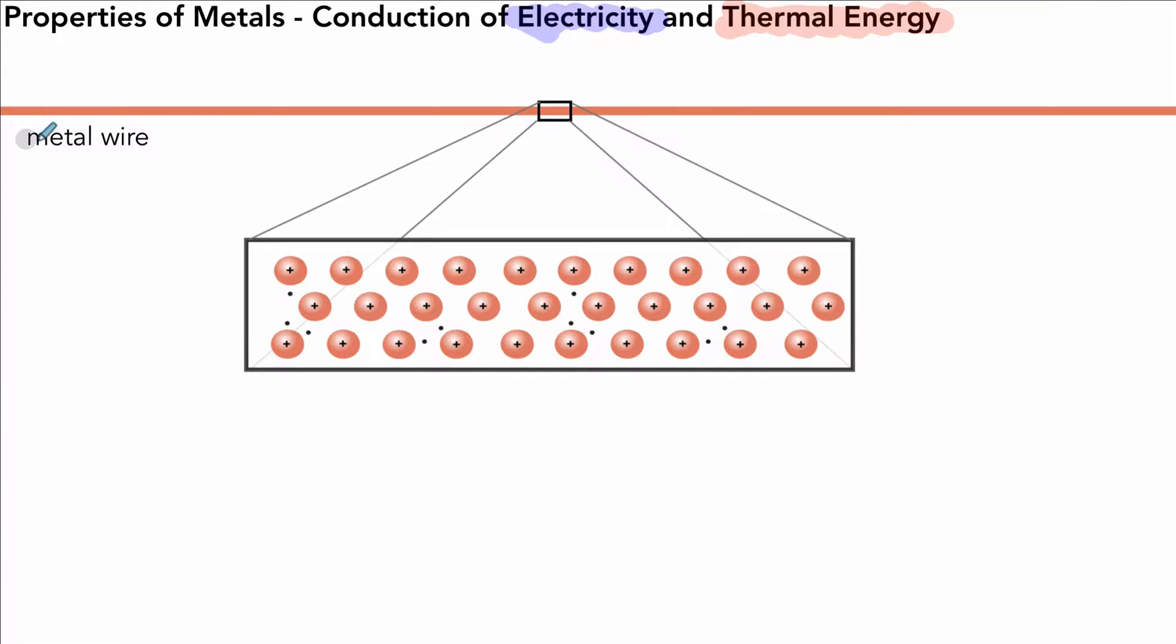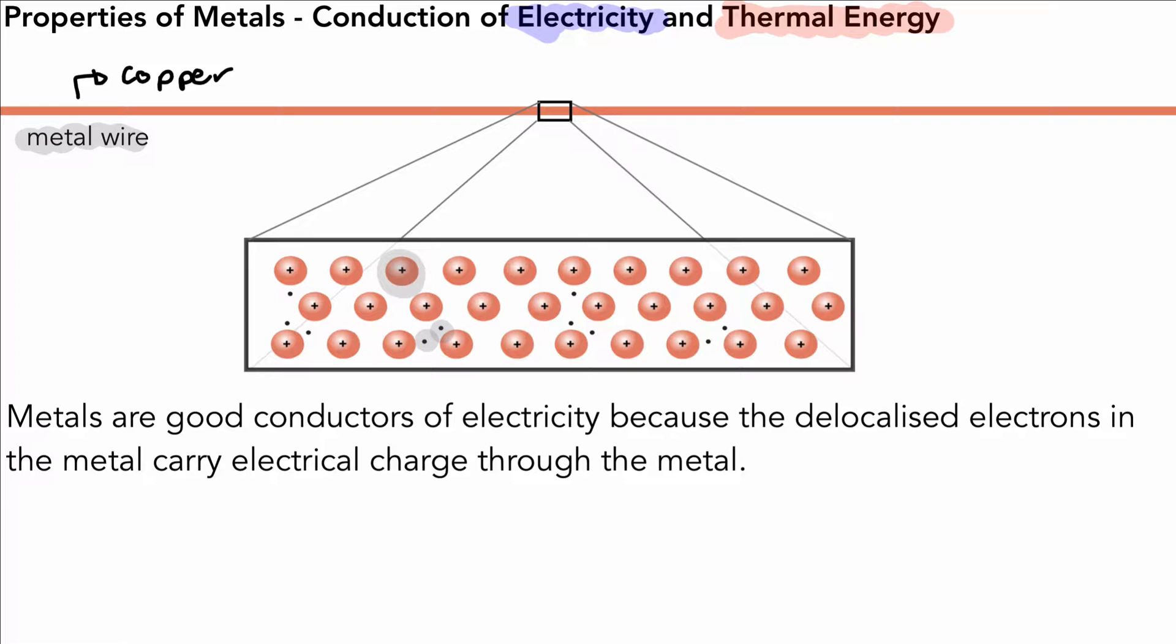So if we were to summarize that in a diagram, here we can look at a piece of metal. In fact, this piece of metal because of its reddish brown color is copper just as an example. But if we zoom in into a particular area, you can see we have our ions here and our delocalized electrons. And we can simply say that metals are good conductors of electricity because the delocalized electrons in the metal can carry electrical charge through the metal.